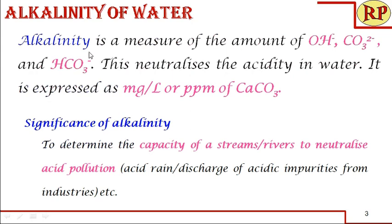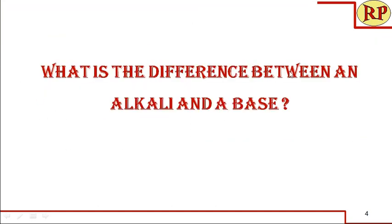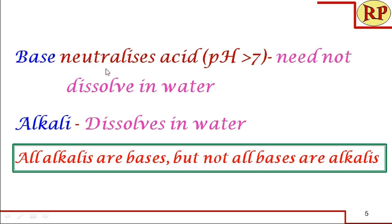Let us understand what alkalinity is. We say it neutralizes acidity in water, meaning it is basic. What is the difference between an alkali and a base? A base neutralizes acid — anything with a pH greater than 7 up to 14 is a base. But a base need not dissolve in water; if it dissolves in water, we call it an alkali. So all alkalies are bases, but not all bases are alkalies.